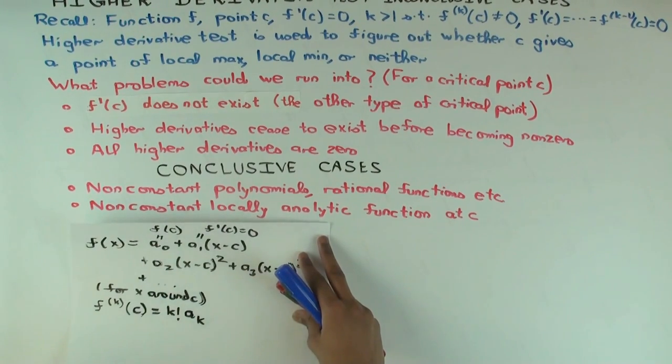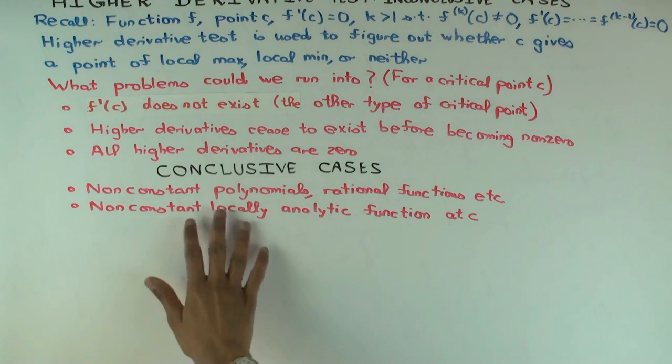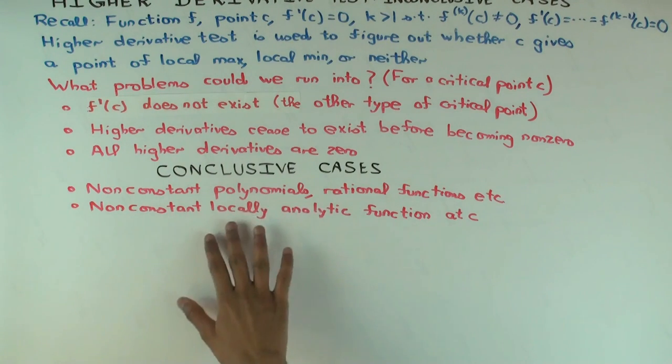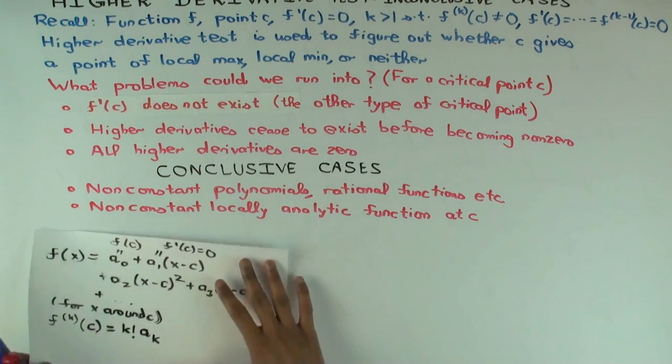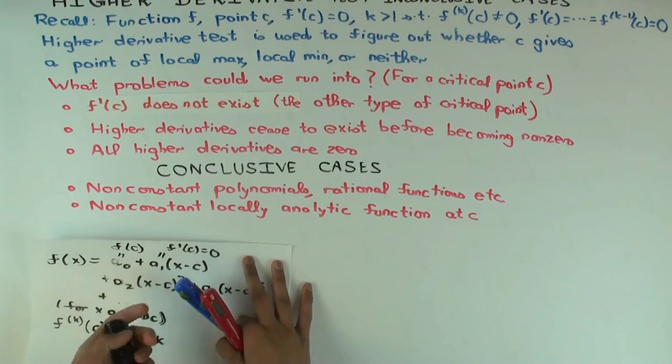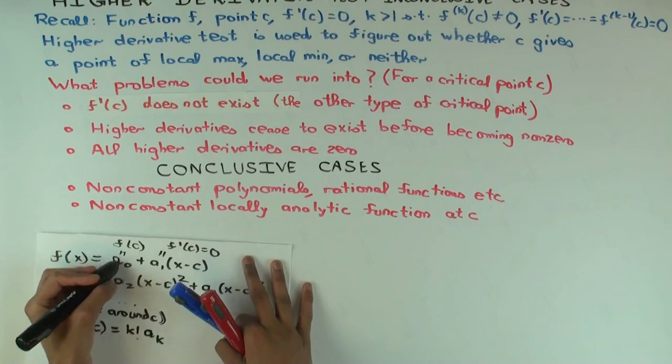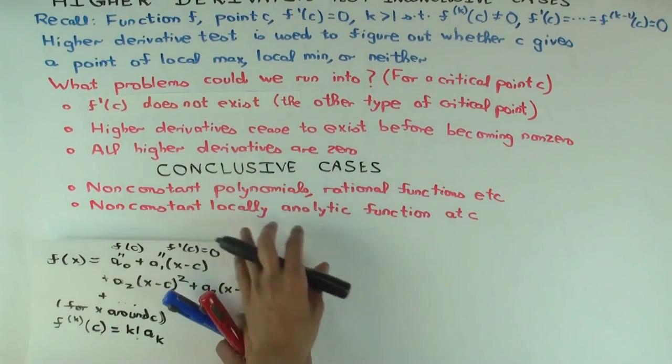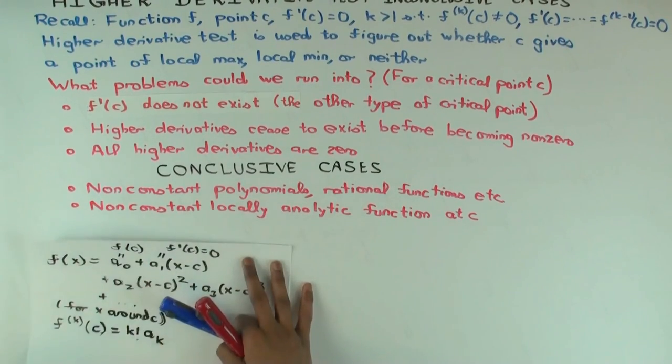So, f(x) just becomes f(c) around c and we are assuming it's non-constant. Well, actually, what I mean is not locally constant. So, it's not constant around c which is not allowed because what we said is that all of these becomes 0 so it does become constant. So that would be a contradiction.